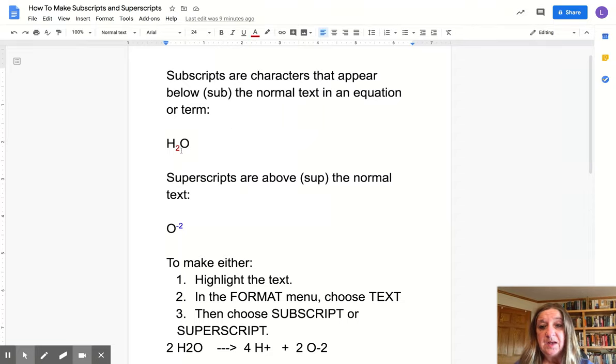A subscript is this little 2 in the H2O, and it's a little bit lower than the letters, and its purpose is to show you how many atoms of hydrogen are in a particular formula. You can use them with atoms and also with ions.